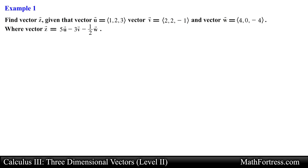Find vector z given that vector u equals (1, 2, 3), vector v equals (2, 2, -1), and vector w equals (4, 0, -4), where vector z equals 5u minus 3v minus one-half w.